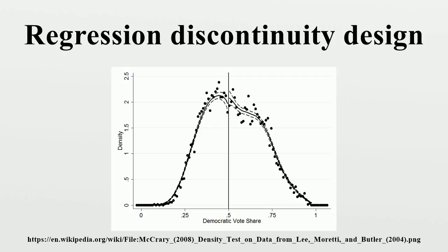This technique was coined regression kink design by Nielsen, Sorensen, and Tabe, though they cite similar earlier analyses. They write: 'This approach resembles the regression discontinuity idea. Instead of a discontinuity in the level of the stipend income function, we have a discontinuity in the slope of the function.' Rigorous theoretical foundations were provided by Card. Note that regression kinks can also mean a type of segmented regression, which is a different type of analysis.